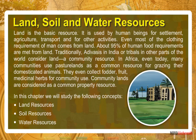Traditionally, Adivasis in India or tribals in other parts of the world consider land a community resource. In Africa, even today, many communities use pasture lands as a common resource for grazing their domesticated animals. They even collect fodder, fruit and medicinal herbs for community use. Community lands are considered as a common property resource.